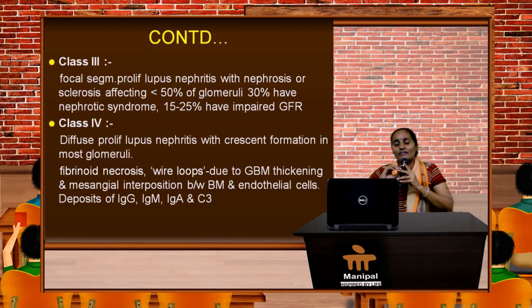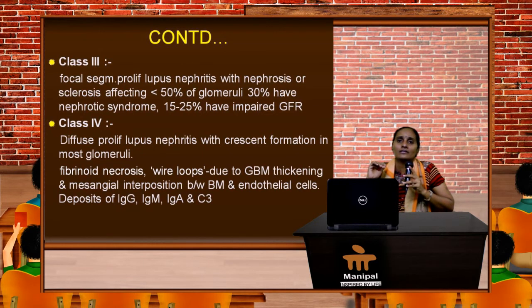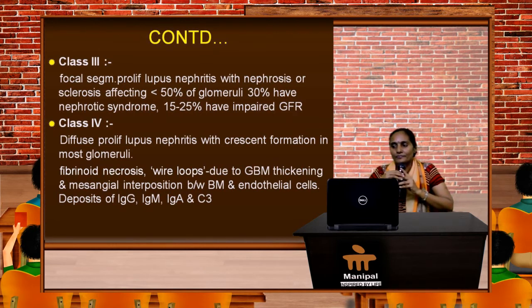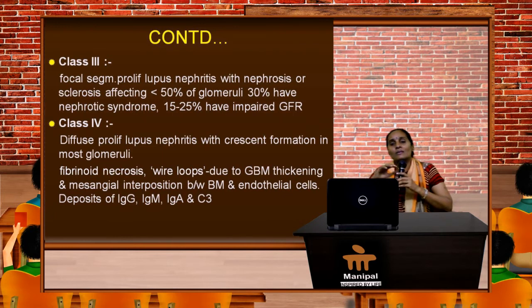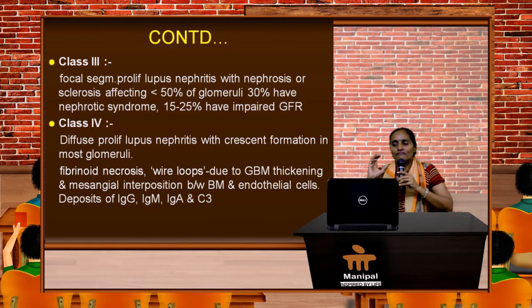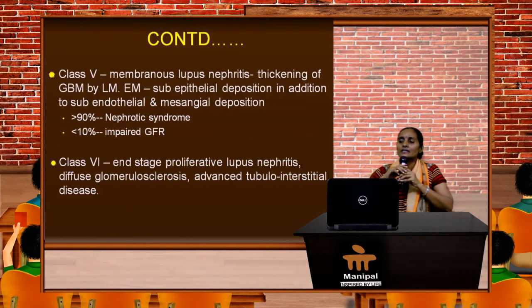Class 3 is focal segmental proliferative lupus nephritis, with nephrosis or sclerosis affecting less than 50% of glomeruli. About 30% of Class 3 patients present with nephrotic syndrome and 15–25% already have impaired GFR. Class 4 is diffuse proliferative lupus nephritis with crescent formation — a sinister sign — fibrinoid necrosis, and wire loops, very classical, due to GBM thickening and mesangial interposition between the basement membrane and endothelial cells, with deposition of IgA, IgM, IgG, and complement C3.